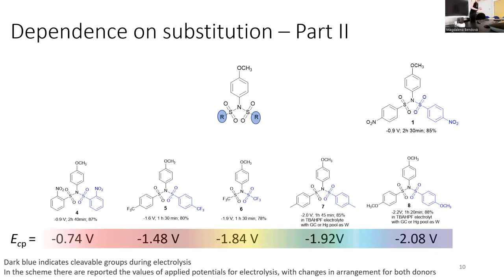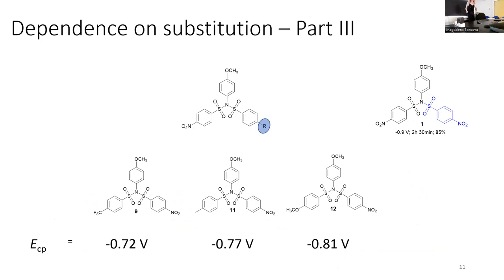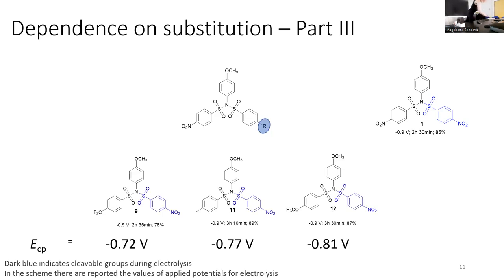Then I thought about preparing something interesting. I prepared derivatives which contain two different sulfonyl groups — one of them was always para-nitrosulfonyl, and the other was of my choice. I prepared those three motifs, and we can see that the splitting potential returned to the lower value. I applied electrolysis and selectively removed the nitrosulfonyl motif. This could be applied, for example, for a synthetic chemist who uses the nosyl motif as a protection group for sulfonamide, because you can easily remove it electrochemically.